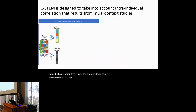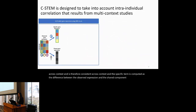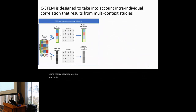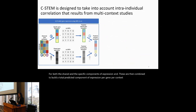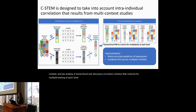CSTEM decomposes expression into a shared component — computed as average gene expression across contexts — and a specific component, computed as the difference between observed expression and the shared component. Like GBAT, CSTEM then builds cross-validated cis-genetic predictors of expression using regularized regression for both components. These are combined to build a total predicted expression per gene per context, which is tested for association with all trans-genes in each context. A hierarchical false discovery correction scheme controls for multiple testing at each level, building a more accurate predictor that combines information across contexts.